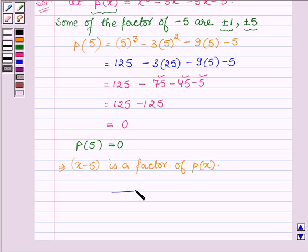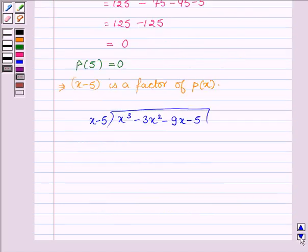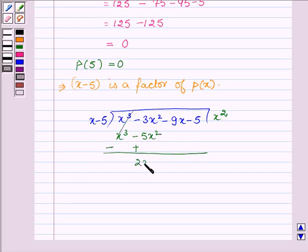On dividing P(x), which is x cube minus 3x square minus 9x minus 5, by x minus 5, on multiplying x minus 5 with x square we get x cube minus 5x square. Changing signs, these two cancel out and we are left with 2x square.